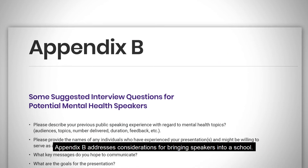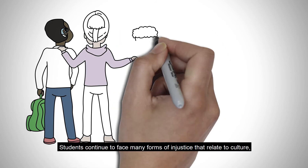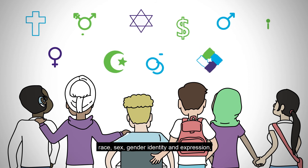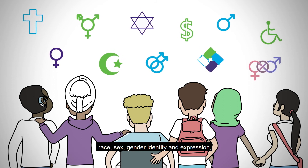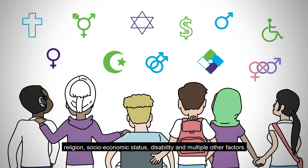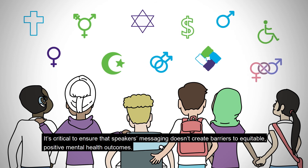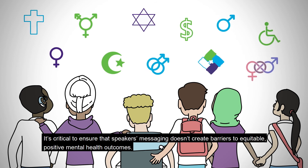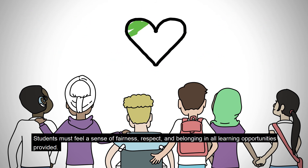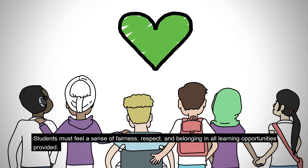Appendix B addresses considerations for bringing speakers into a school. Students continue to face many forms of injustice that relate to culture, race, sex, gender identity and expression, religion, socioeconomic status, disability, and multiple other factors. It's critical to ensure that speakers' messaging doesn't create barriers to equitable, positive mental health outcomes. Students must feel a sense of fairness, respect, and belonging in all learning opportunities provided.